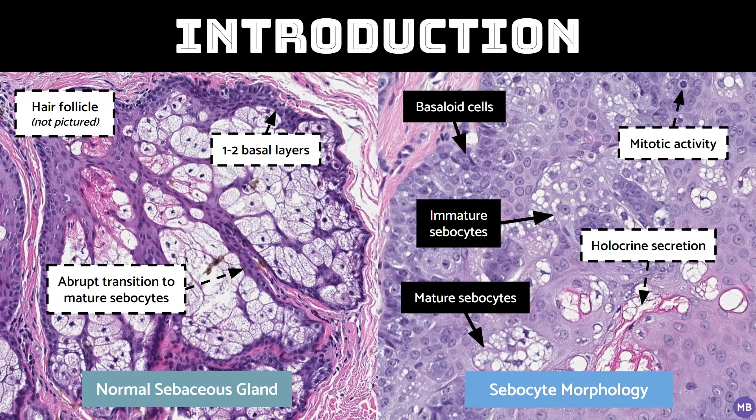When approaching a sebaceous lesion, there are a couple of pitfalls to be aware of. Holocrine secretion can be extensive in both benign and malignant sebaceous tumors and may be misidentified as tumor necrosis, leading to a misdiagnosis of sebaceous carcinoma. I'll discuss this more later, but sebaceous carcinoma should not be diagnosed based on the presence of necrosis alone. In addition, the true necrosis seen in sebaceous carcinoma is morphologically distinct from what we see in holocrine secretion. Another possible pitfall is mitotic activity. Because the basal cells are essentially the proliferative layer, some mitotic activity in these cells is not concerning.